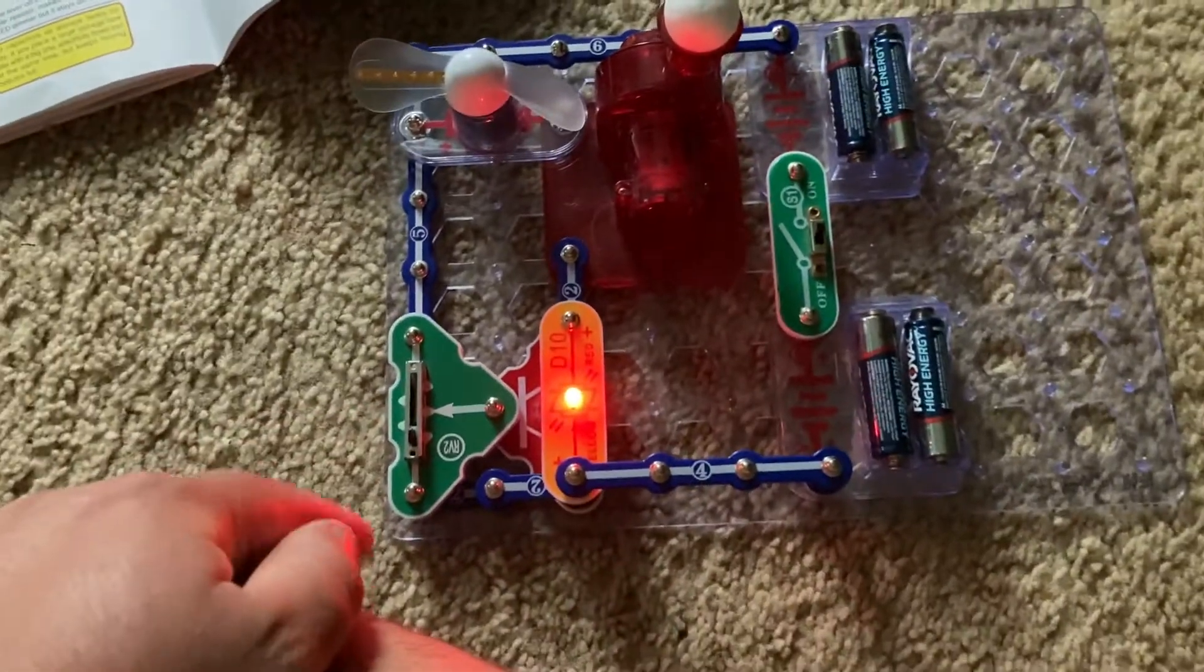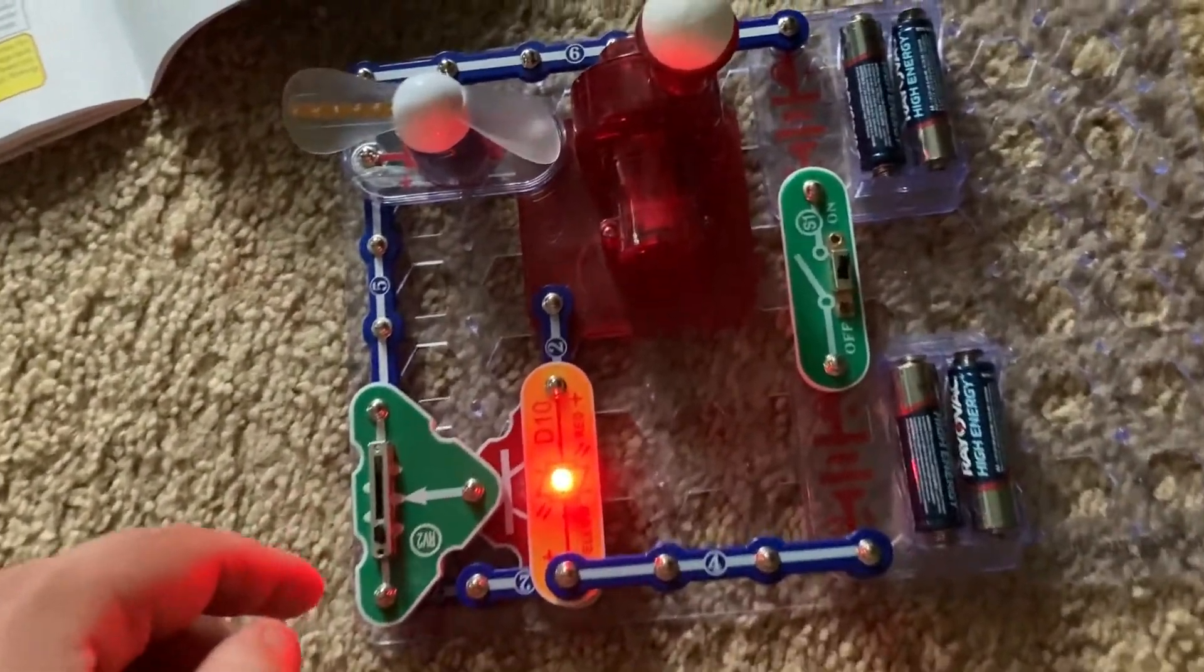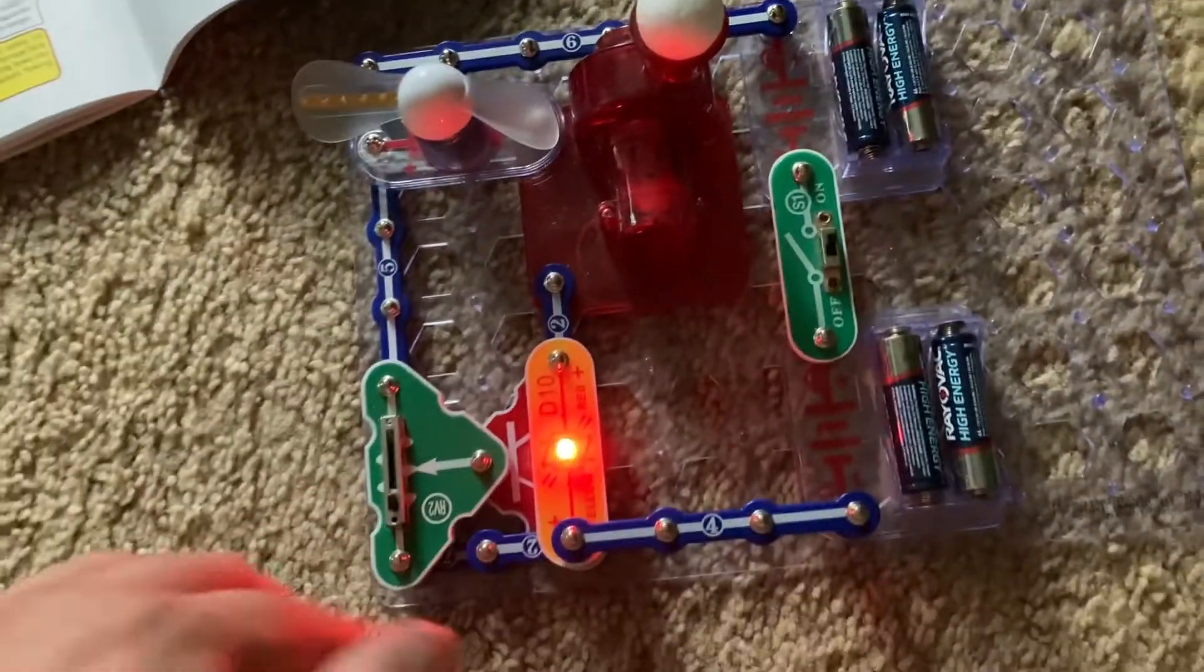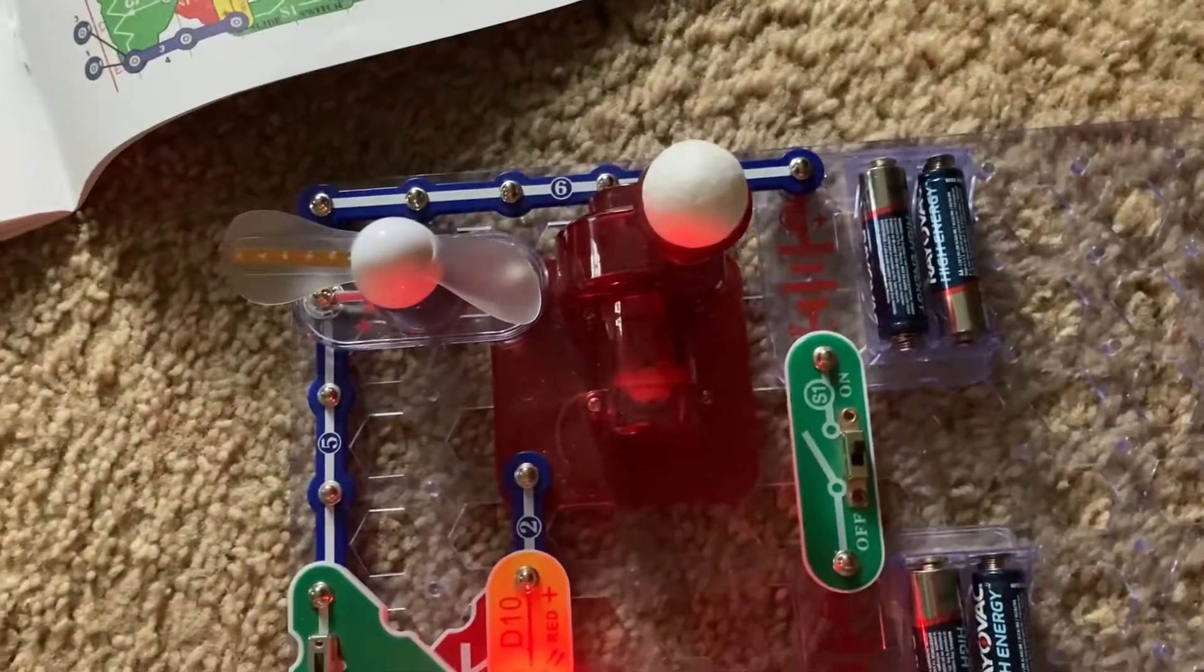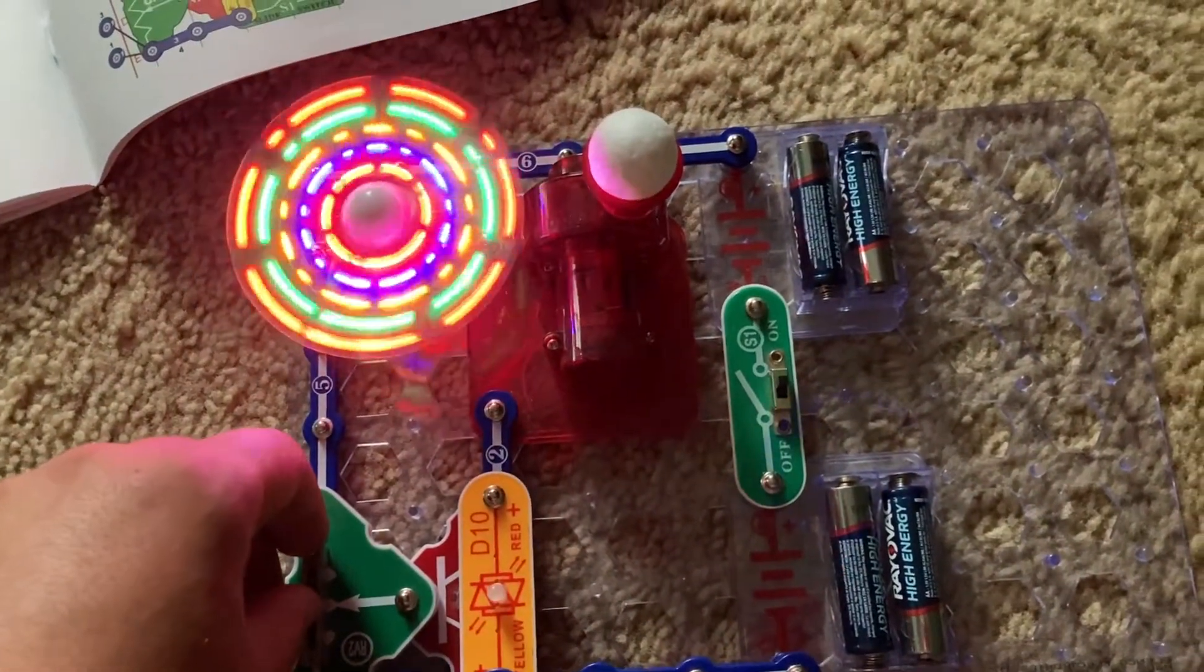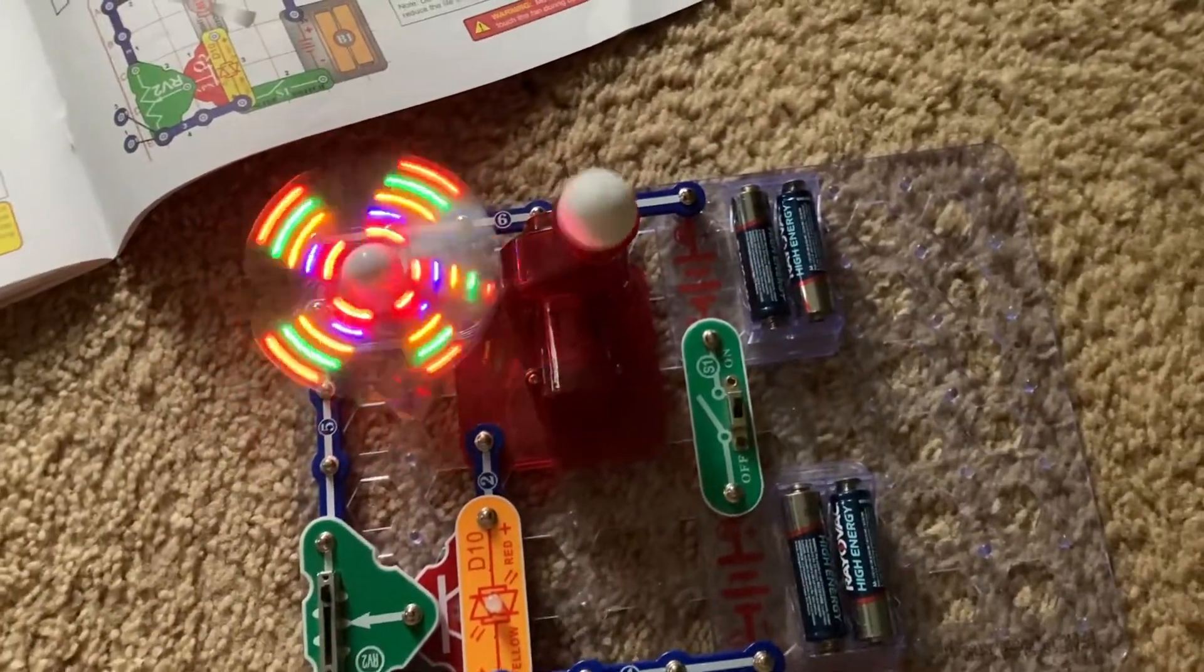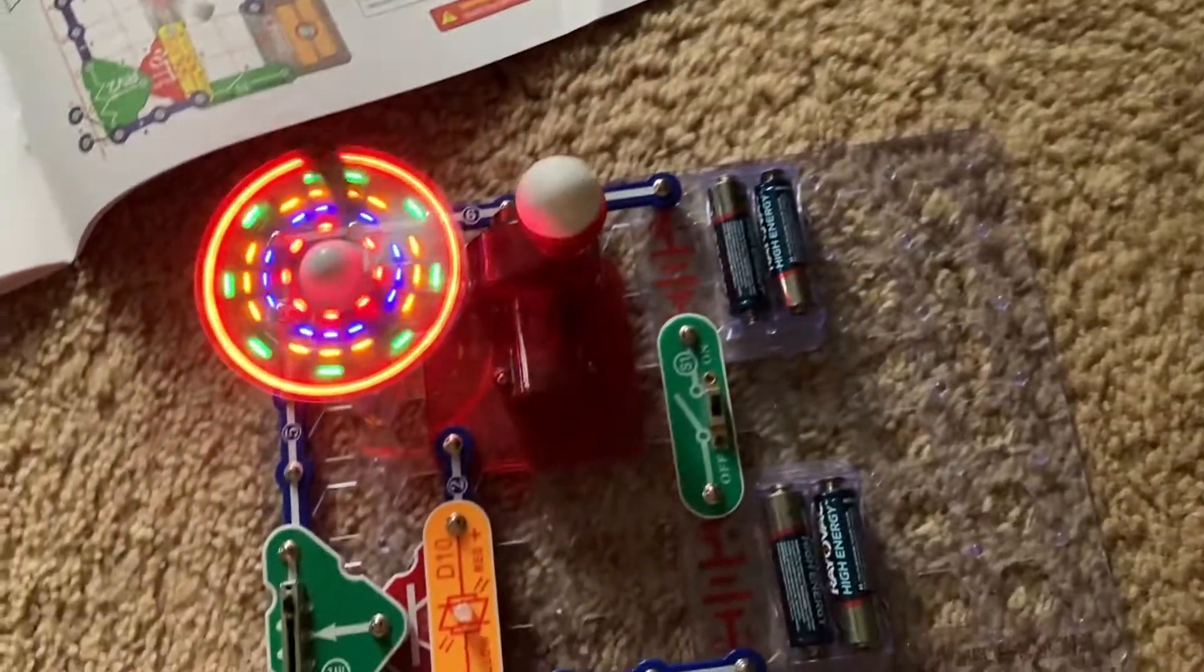When the RV lever is closest to me, the bicolor LED will be on at full brightness and it's red, while the light motor and air fountain will be off. Now if I move the lever on the adjustable resistor farthest from me, the light motor and the air fountain will be on.